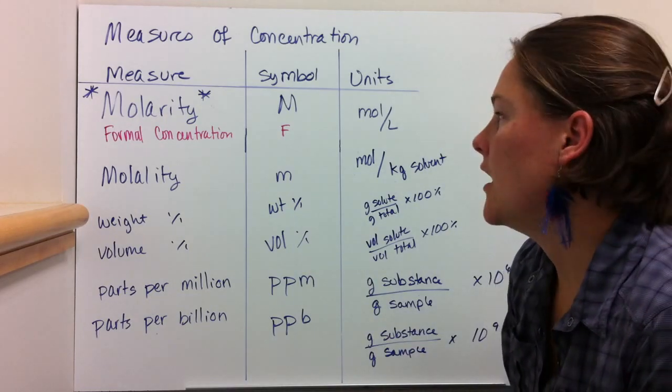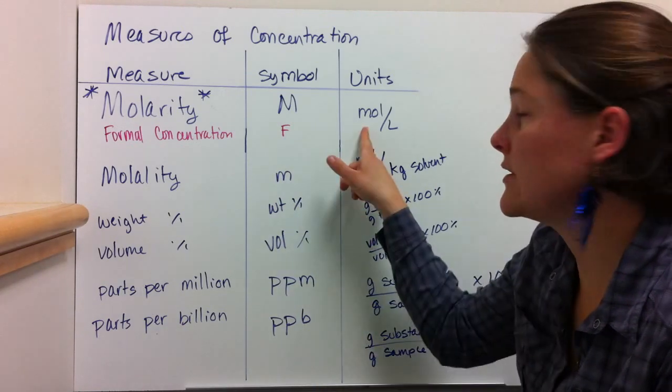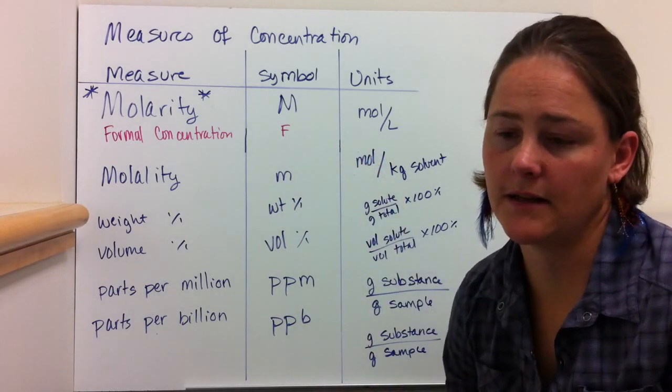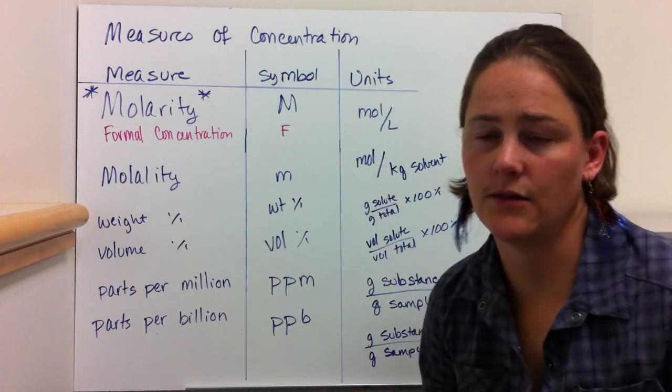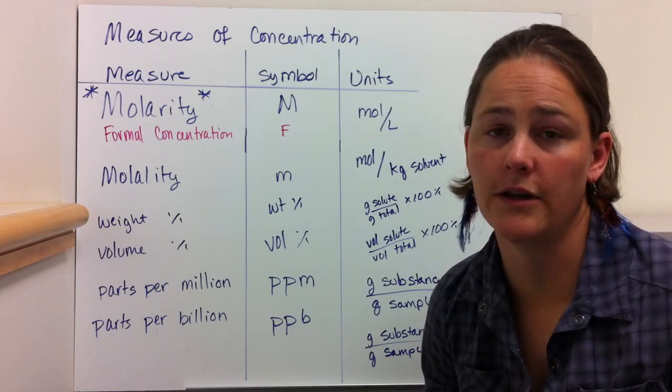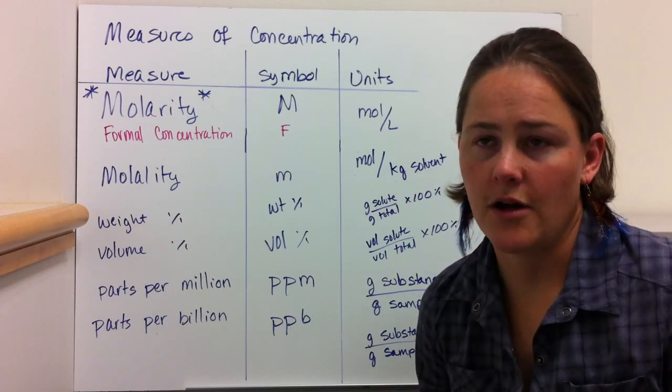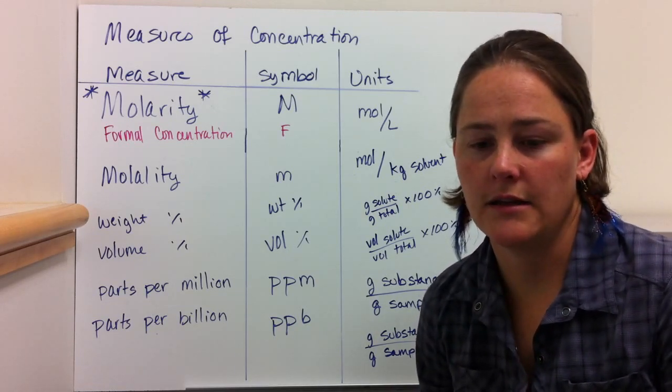The symbol is F and the units are still moles per liter. That's basically where you have something that dissociates in solution. Electrolyte dissociates either totally or partially if it's a strong or weak electrolyte.